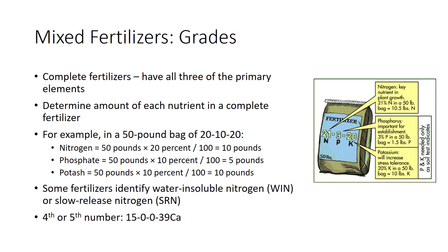Grade may also identify a secondary nutrient as a fourth or even fifth number in the traditional nitrogen, phosphorus, and potassium sequence. For example, calcium nitrate may carry the grade 15-00-39 CA, meaning the material is 39% calcium. Similarly, sulfur or magnesium may be found as a fourth number.